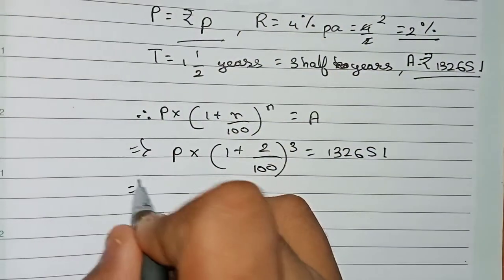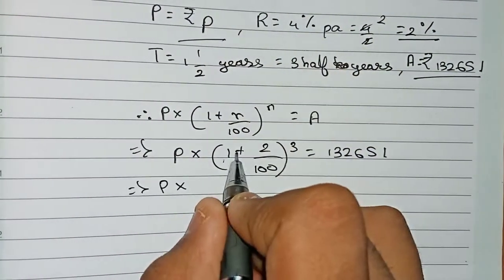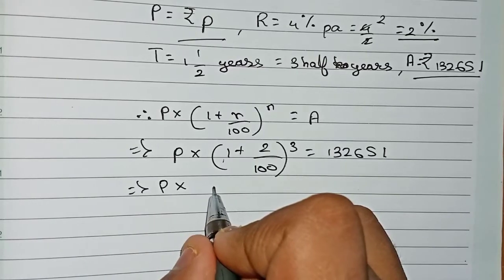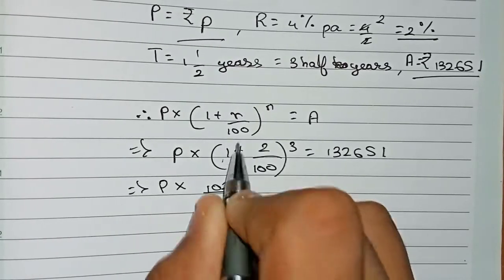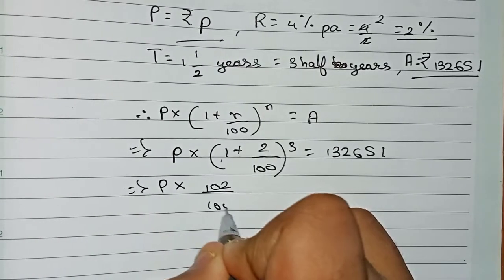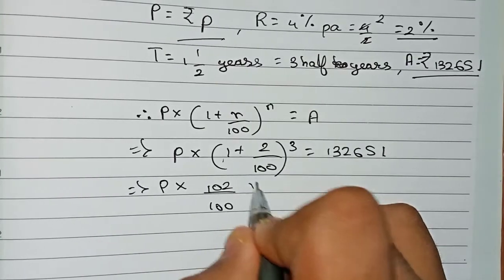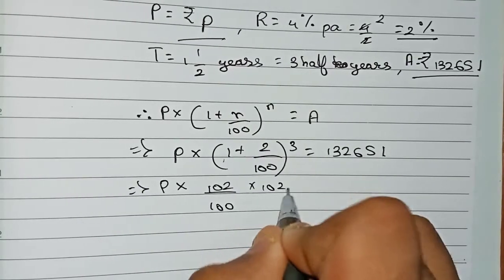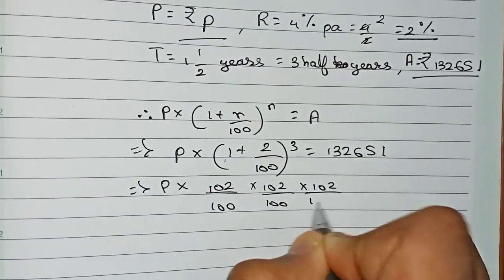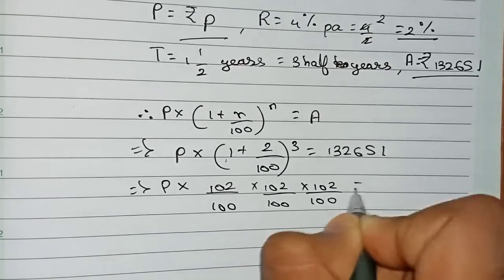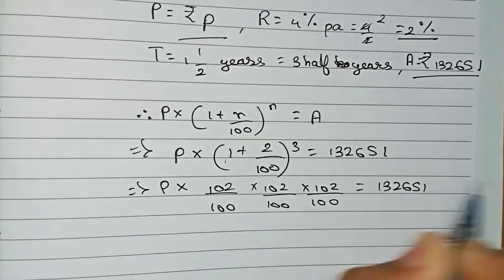So P × (102/100)^3 equals 1,33,651. Expanding, that means (102/100) is written three times: (102/100) × (102/100) × (102/100) = 1,33,651.